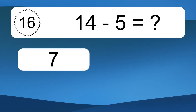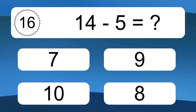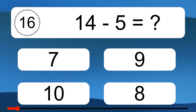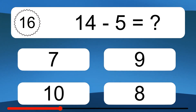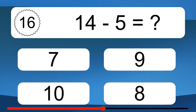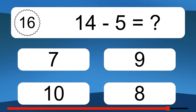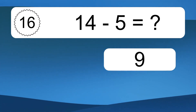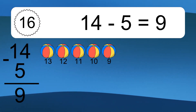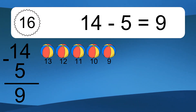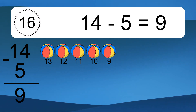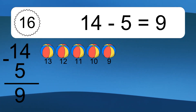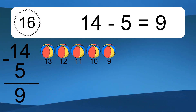14 minus 5 equals what? 14 minus 5 equals 9. Let's count it: 13, 12, 11, 10, 9.